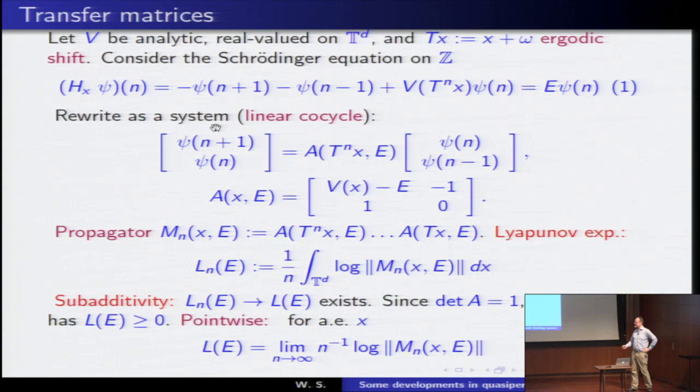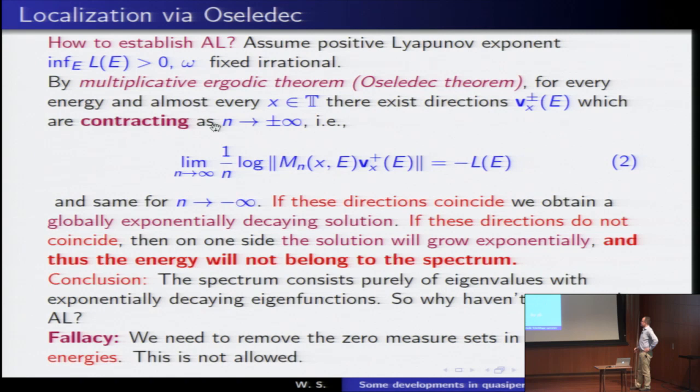So this is relatively trivial that these averages converge, less trivial that these limits exist almost everywhere. So then how would you establish this Anderson localization? Well, you might refer to the Oseledec theorem which came out of Sinai's seminar in Moscow, that you have a filtration of directions. What this means is that you can find x-dependent vectors depending on the phase such that if you apply these matrices to that direction they will give you, this here is written in the contracting way because the contracting direction is unique. The expanding is non-unique.